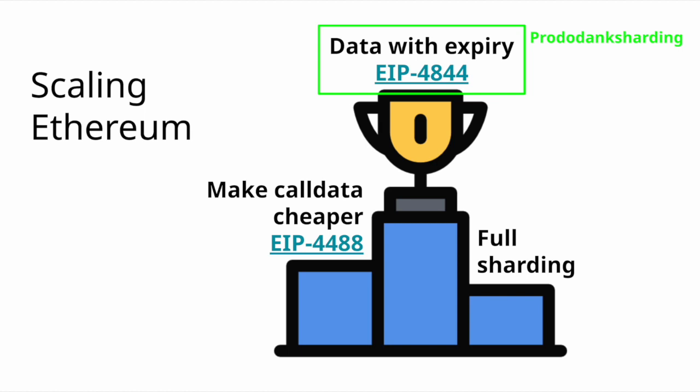Full sharding was replaced with two proposals with very similar names: EIP-4488 and EIP-4844. EIP stands for Ethereum Improvement Proposal. EIP-4488 proposed to make call data cheaper, but instead Ethereum decided to focus on EIP-4844, which suggests adding data with an expiry. Ethereum will now store data blobs — data fragments that expire and are erased after some period of time. The current thinking is one to two months of guaranteed storage. This EIP is also called proto-danksharding, and it's mostly implemented and should be incorporated into Ethereum pretty soon.